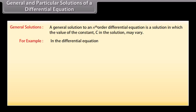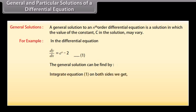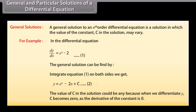The general solution can be found by integrating equation 1 on both sides, giving y = e^x − 2x + C, name it as equation 2. The value of C in the solution could be any value, because when we differentiate y, C becomes 0 as the derivative of a constant is 0.